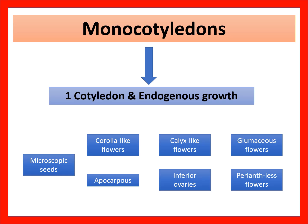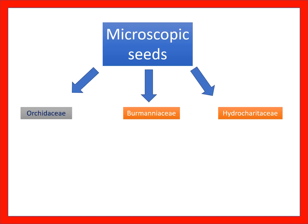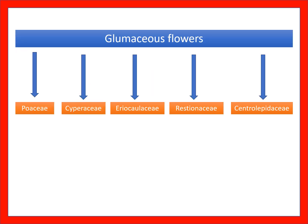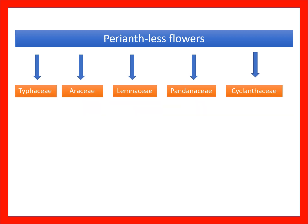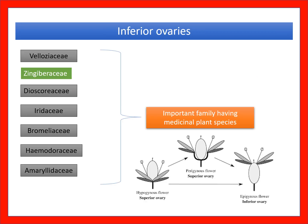Zingiberaceae is one type of monocot. Monocots have one cotyledon and endogenous growth. Key monocot families include: macroscopic seeds — Orchidaceae, Burmanniaceae, Hydrocharitaceae; glumaceous flowers — Poaceae, Cyperaceae, Eriocaulaceae, Restionaceae, Centrolepidaceae; perianthalous flowers — Typhaceae, Araceae, Lemnaceae, Pandanaceae, Sparganiaceae. In Zingiberaceae, an inferior ovary is observed.